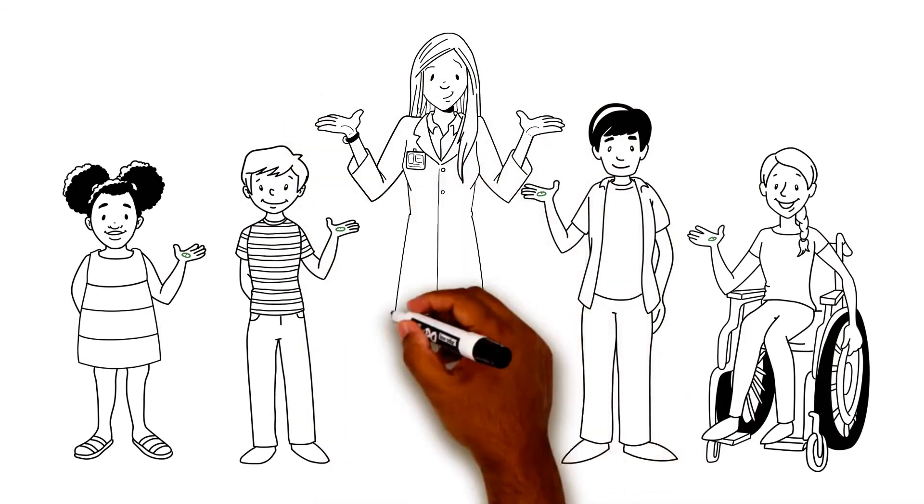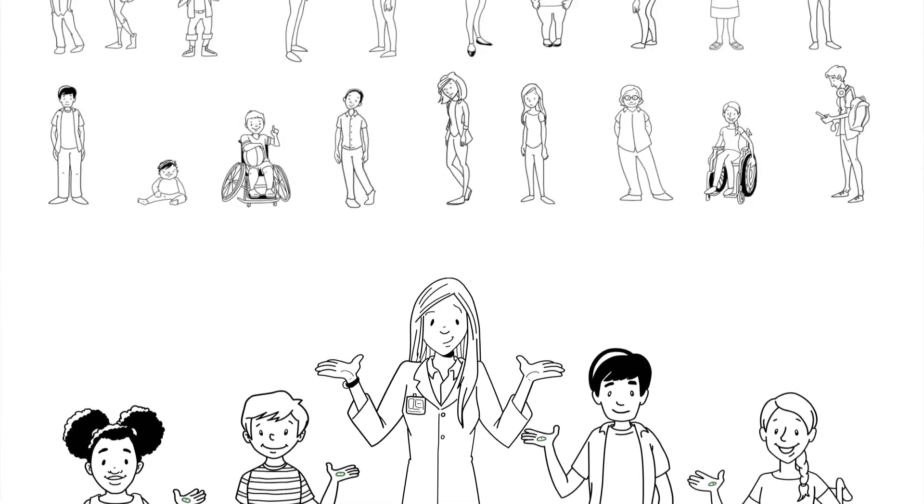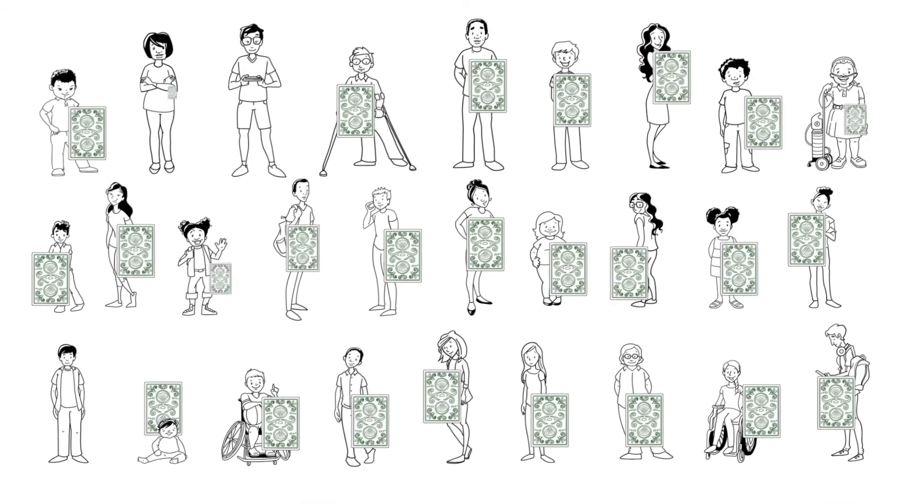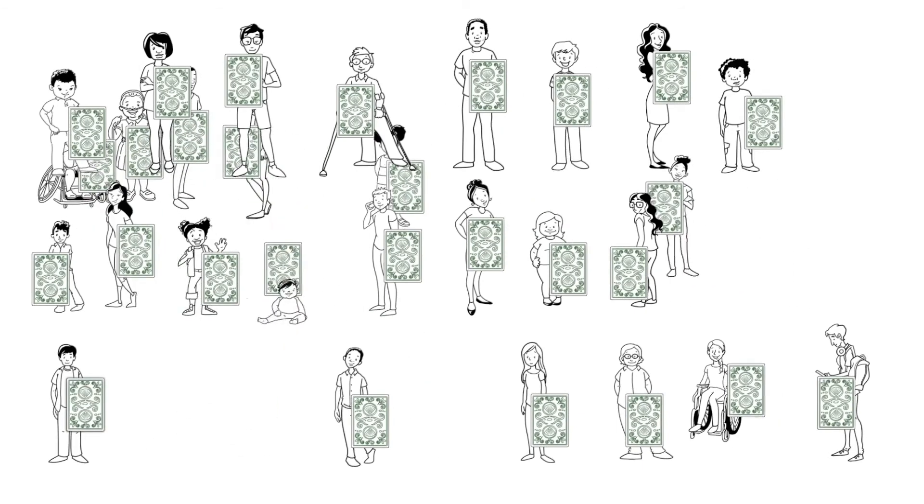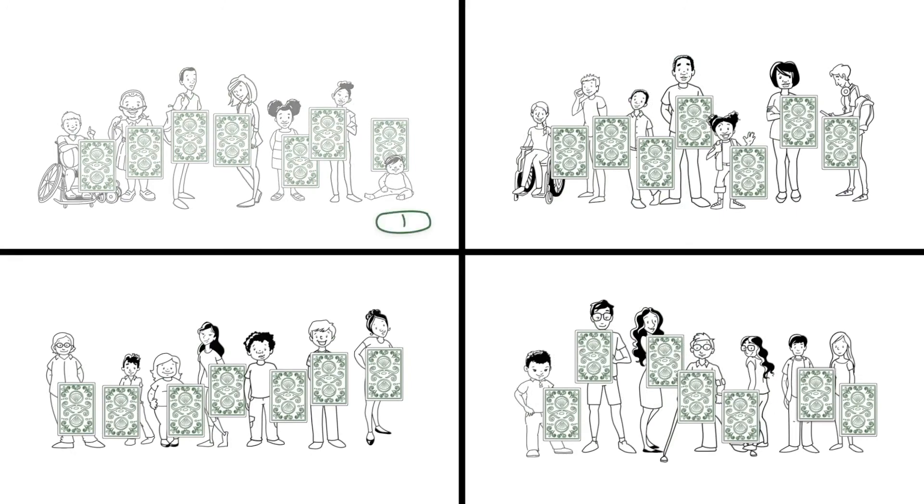A placebo is only used when there is not enough proof to show that any other treatment works. Researchers would never take away a treatment that they know works just to give a placebo. In a study with a placebo, the randomization works the same. Some VIPs will be randomized to the placebo group and some will be randomized into the treatment groups.